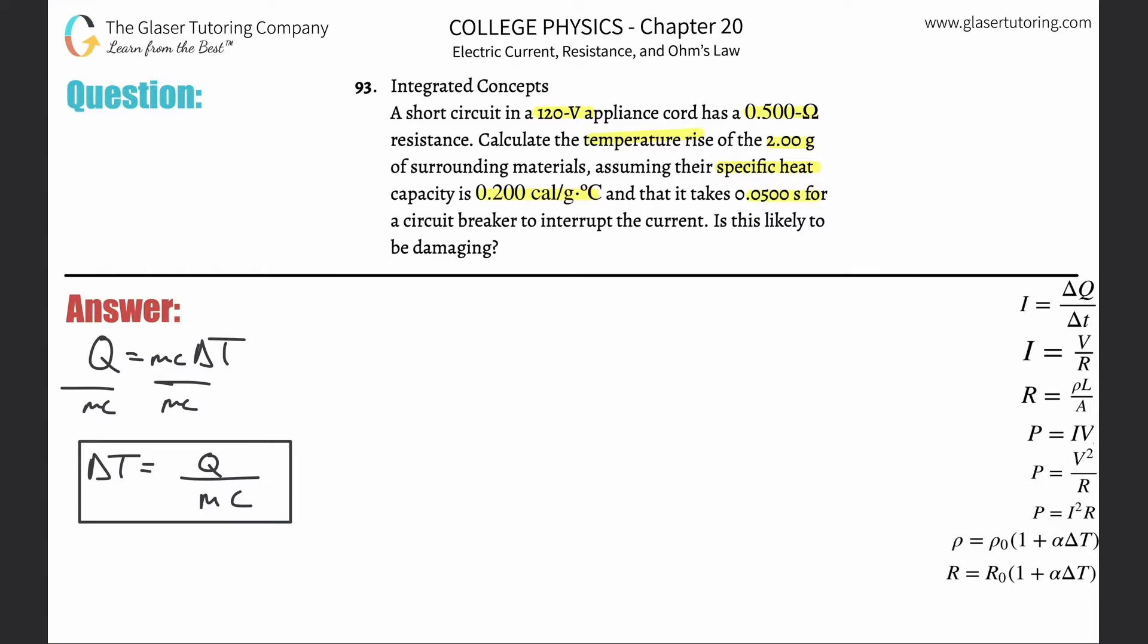Which one involves energy? Power. Power is watts, and watts are joules per second. I'm going to use this formula: power equals voltage squared divided by resistance. Voltage squared is 120 squared divided by the resistance of 0.5. The power is 120 squared divided by 0.5, so about 2.88 times 10 to the 4th.